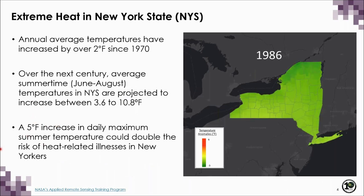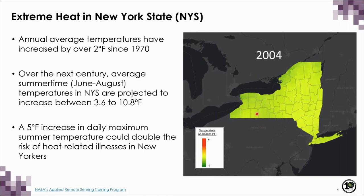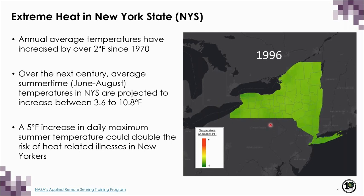Why should we care about extreme heat in a temperate region like New York State? Summer temperatures across New York have been increasing. This map displays temperature anomalies by census tract — differences from the norm — where the norm for each census tract was based on the 30-year average temperature. Although we do not have frequent heat waves in all areas of the state, the temperatures show a warming trend. The annual average temperatures have increased by over 2 degrees Fahrenheit since 1970, and over the next century, average summertime temperatures are projected to increase between 3.6 to 10.8 degrees Fahrenheit.